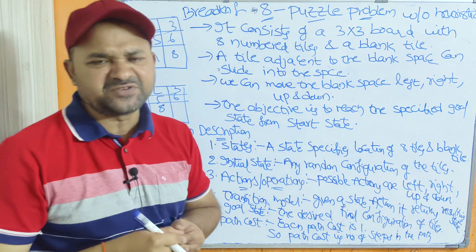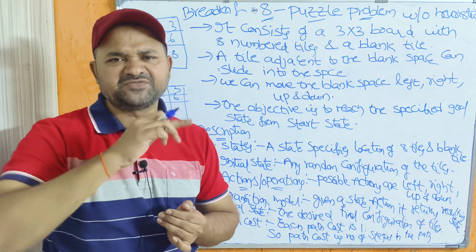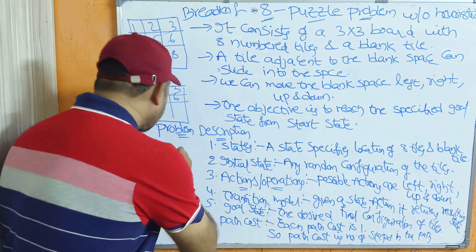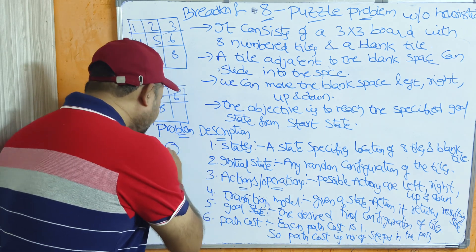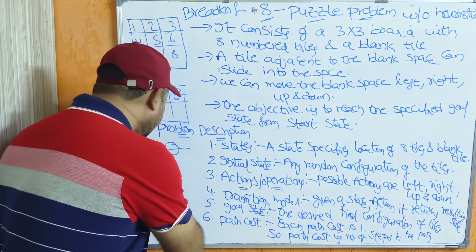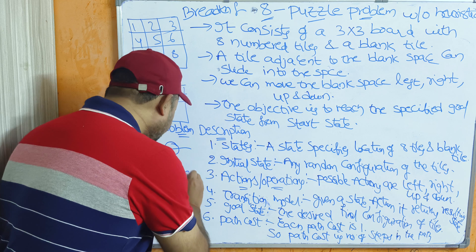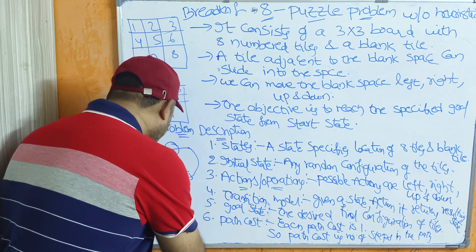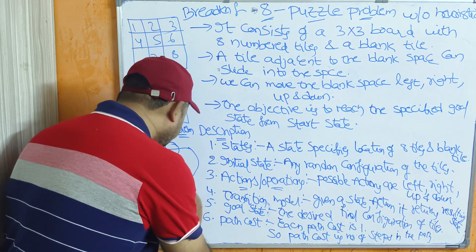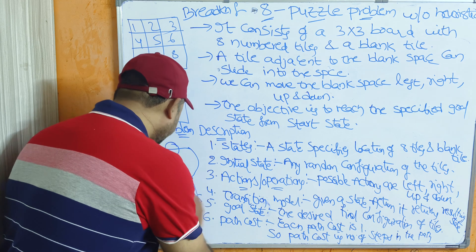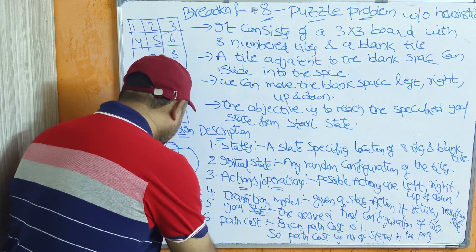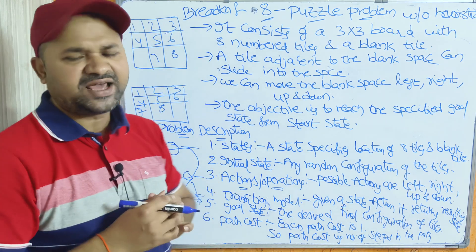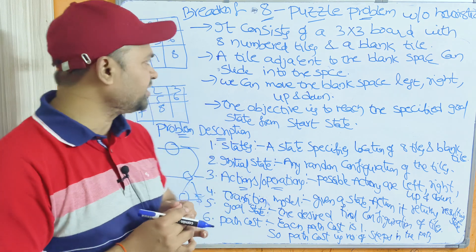Breadth-first search means level by level. First, the node at level 0 will be visited. Next, the nodes at level 1 are visited. Next, the nodes at level 2 are visited. So — level 0, level 1, level 2 — likewise all the nodes will be visited.